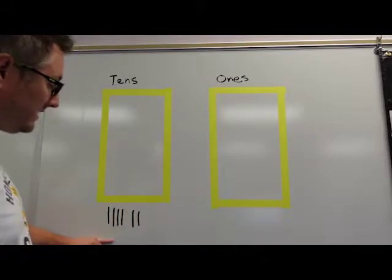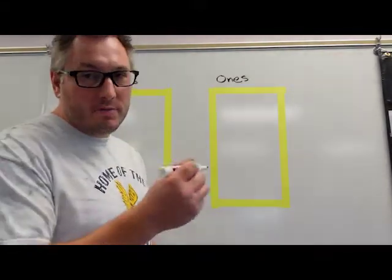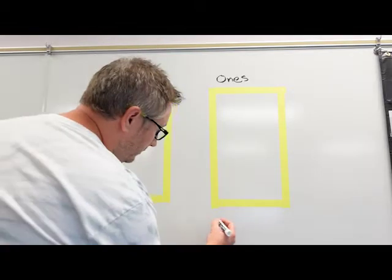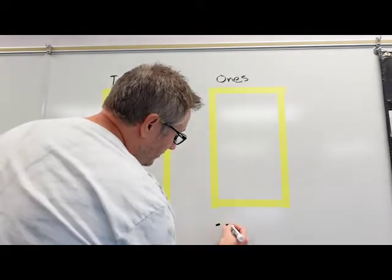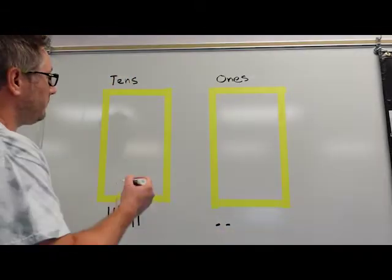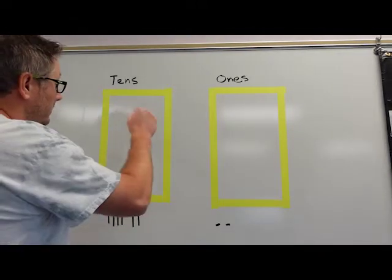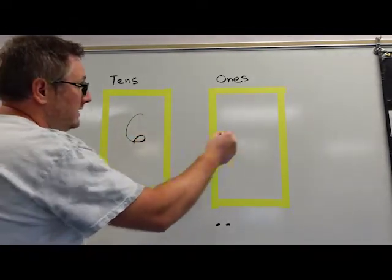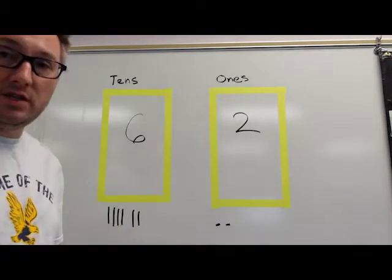After you have six tens do the two ones just making a small circle. One, two. Let's draw our number. Six tens and two ones. The number is 62.